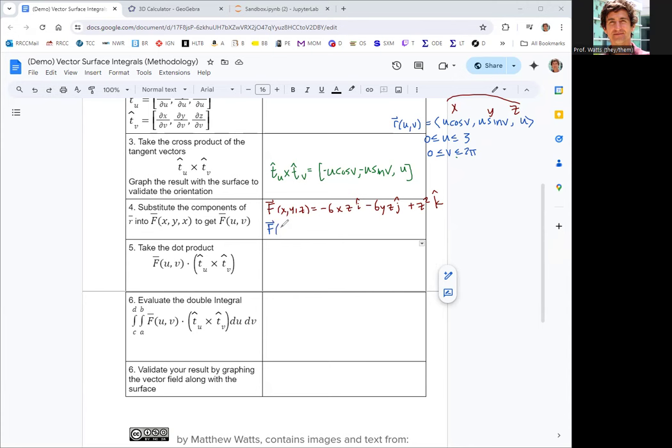So that will give us the vector field in terms of u and v. Negative 6xz: we'll replace x with u cosine v and replace z with u, giving us negative 6 u squared cosine v. Negative 6yz: negative 6 u sine v times u gives negative 6 u squared sine v. And then the z squared is just u squared. I've replaced x with u cosine v, y with u sine v, and z with u. Now I have the vector field f in terms of u and v, the parameters.